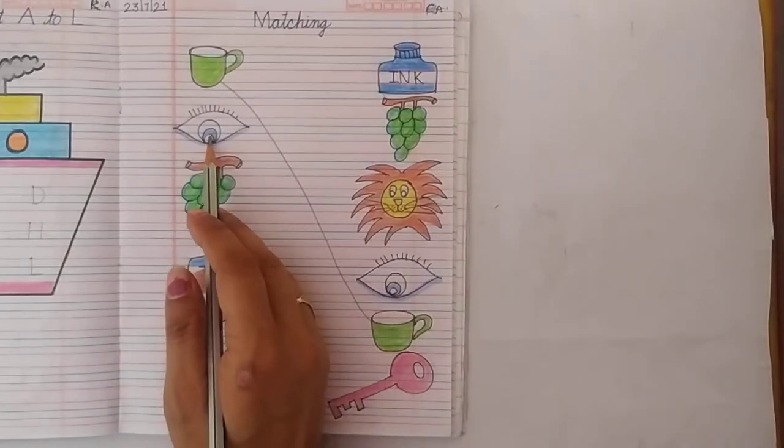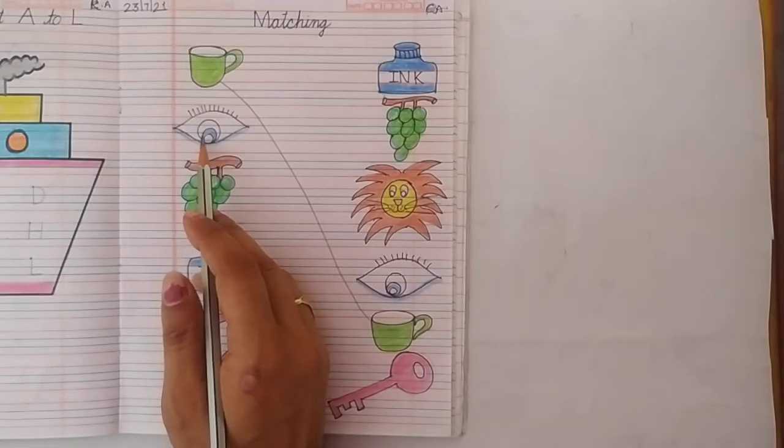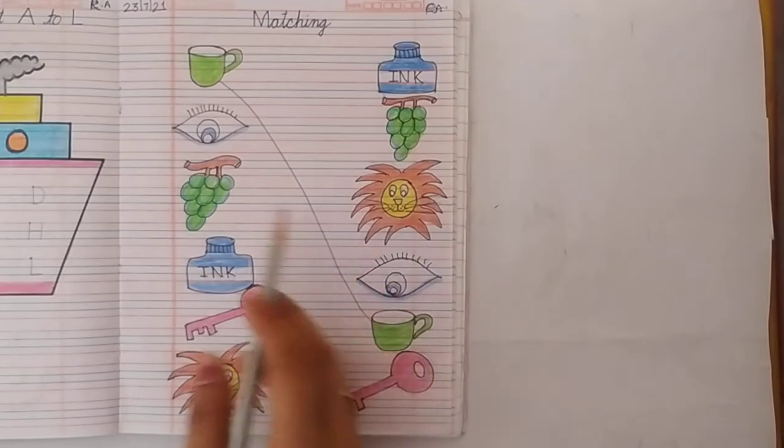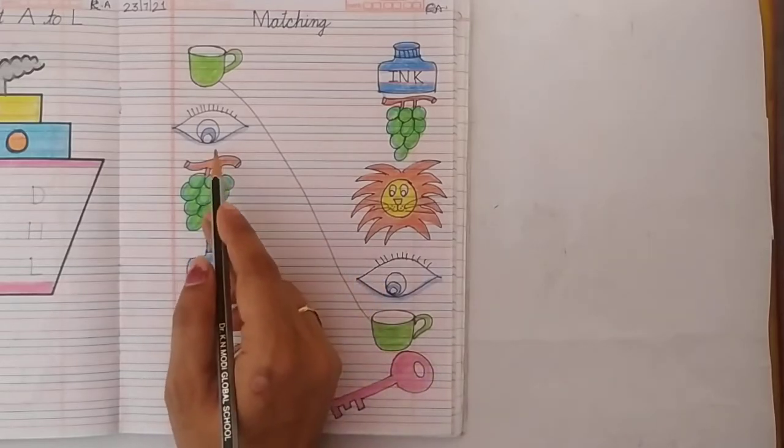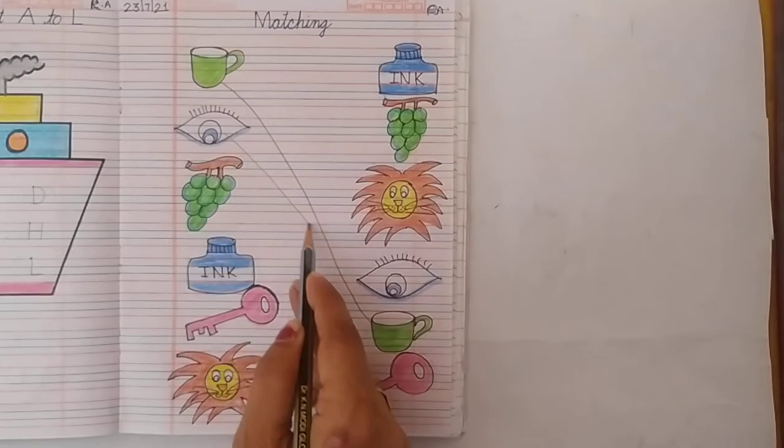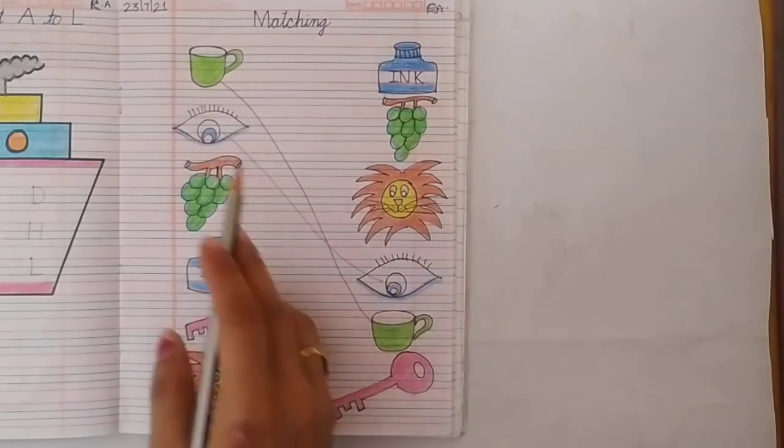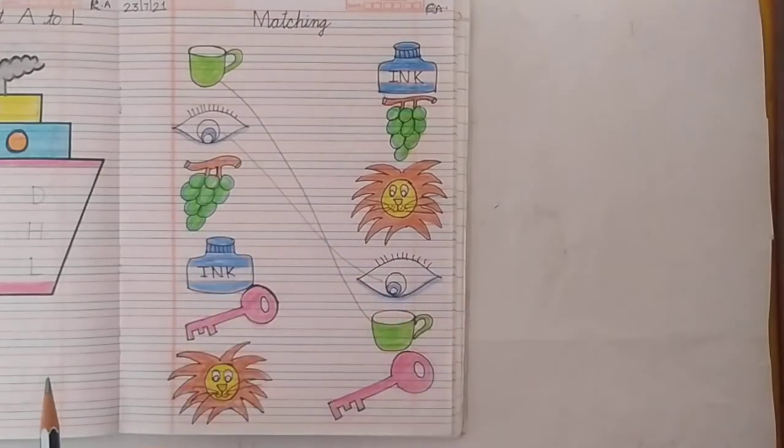Look here. This is a picture of eye. And here is another eye. Same eye. So kids now we match E for eye. Hama eye ko eye se match kareenge. Yes.